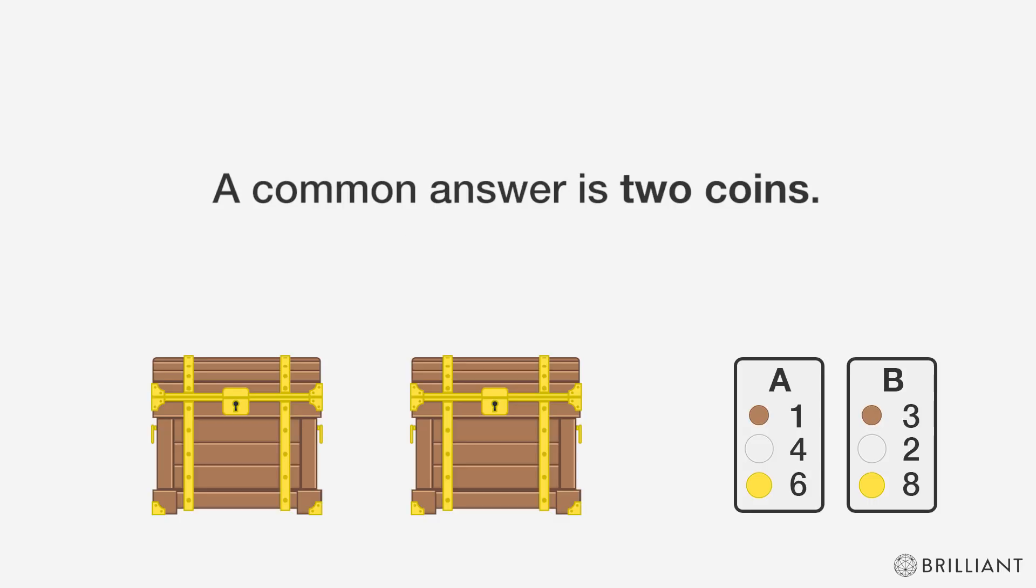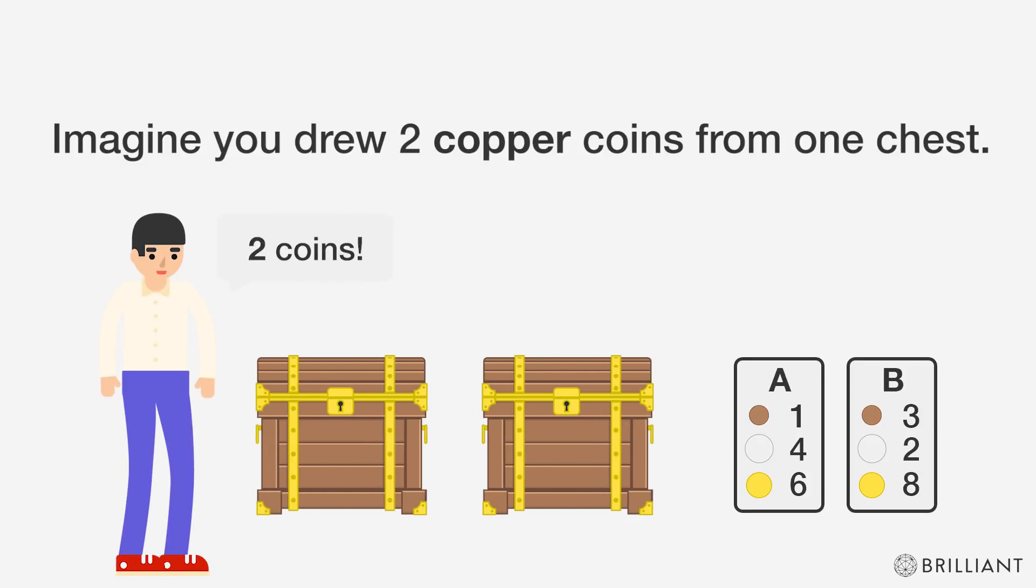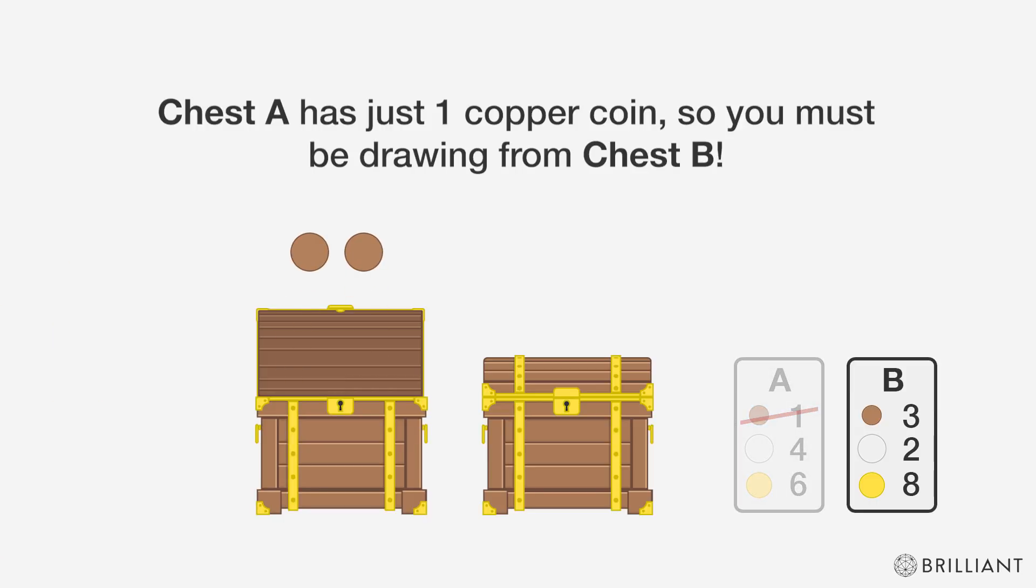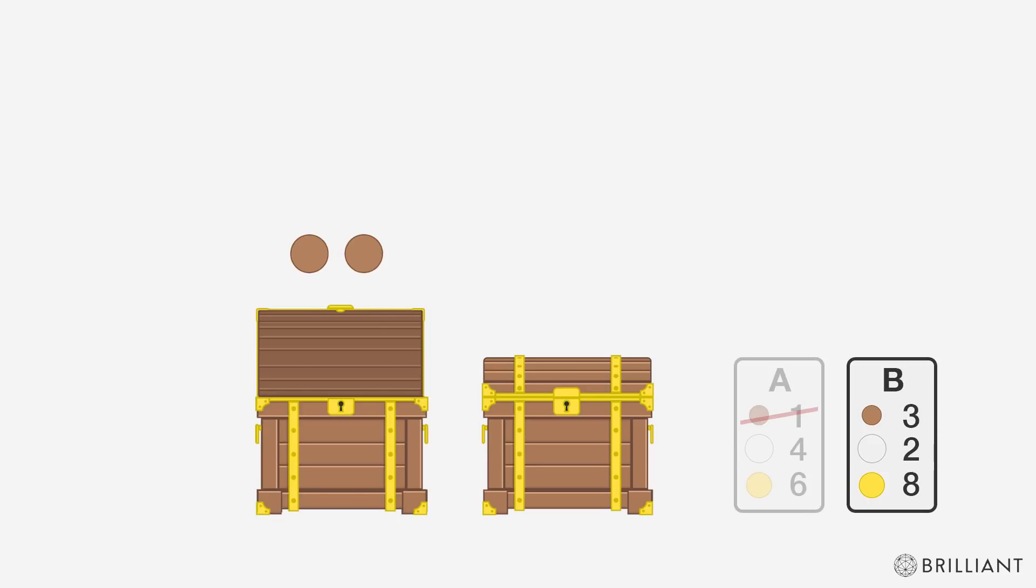A common answer is two coins. Imagine you drew two copper coins from one chest. Chest A has just one copper coin, so you must be drawing from chest B. Congrats, you identified the chests.